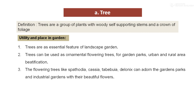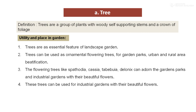Trees like Tabebuia, which flower during the summer, also Cassia and Spathodia, can enhance the beauty of the garden in summer dry conditions too. These trees can be used for the industrial garden with their beautiful flowers. In an entrance or outside area, if an industry decorates with a garden which includes trees as per their utility, it definitely enhances the beauty.